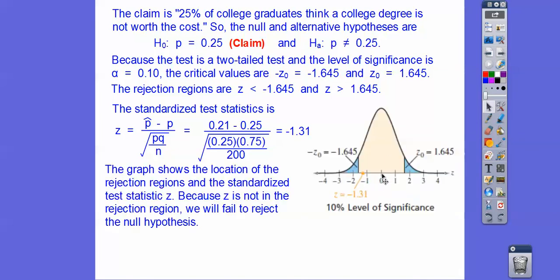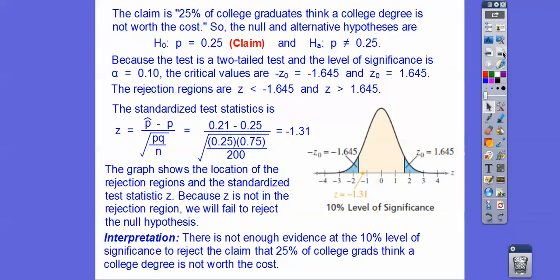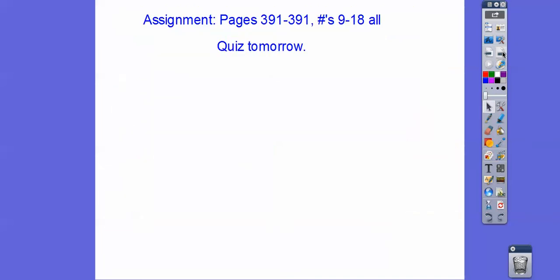Here's our curve. Zero, negative 1, negative 2, and negative 1.645 is a bit past halfway between. Our rejection region is anything less than -1.645 or greater than +1.645. But our Z score of -1.31 didn't go there. Because Z is not in the rejection region, we fail to reject the null hypothesis. There's not enough evidence at the 10% level to reject the claim that 25% of college graduates think a college degree is not worth it. All right, there's your assignment. Take care.